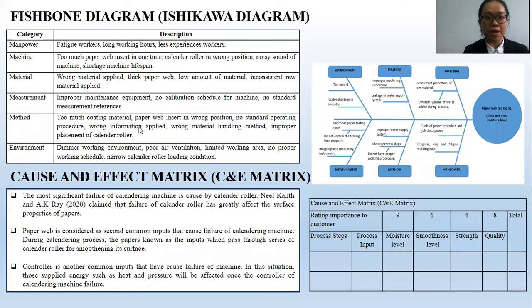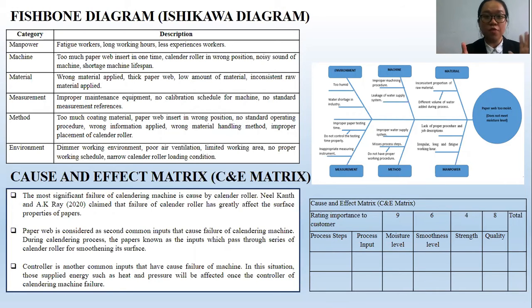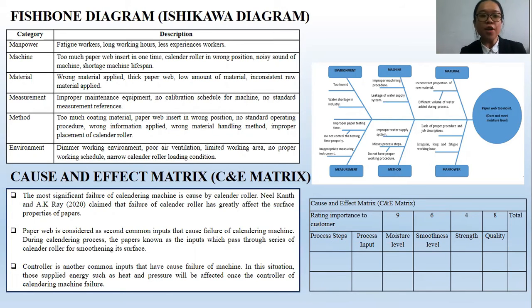The third analysis tool applied in this research study is the Fishbone diagram, also known as the Ishikawa diagram. In this situation, six different categories are involved to identify possible failures from six different perspectives that cause the failure of the calendering machine.